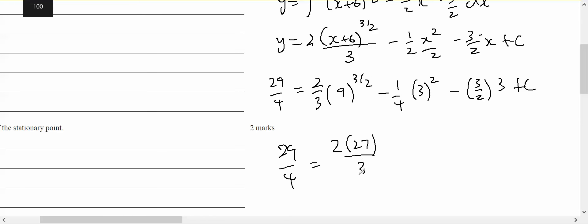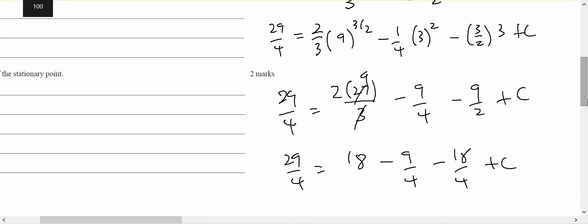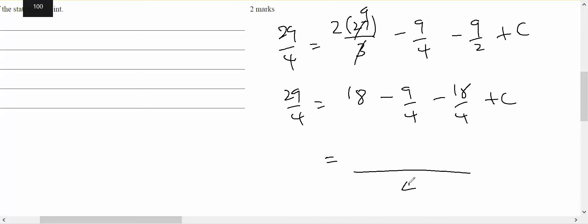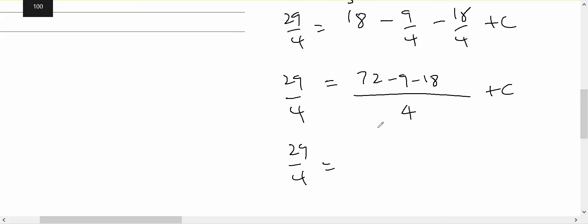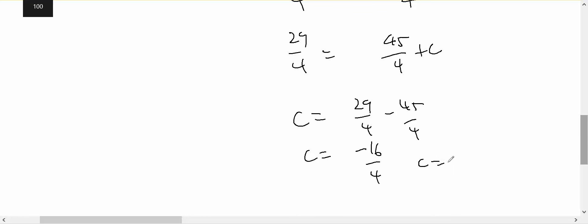...minus nine on four, minus nine on two, plus c. So 29 on four equals 18, minus nine on four, minus 18 on four. Therefore c is going to be minus 16 on four, so c equals negative four.